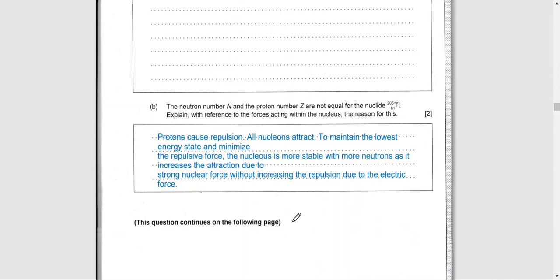The strong nuclear force needs to be more powerful than the electrostatic repulsive force for the nucleus to be stable. Neutrons provide more attraction force without providing any extra electrostatic repulsive force. Adding more protons increases positive charges repelling each other, making the nucleus less stable. Adding neutrons increases the strong nuclear force, making the nucleus more stable.